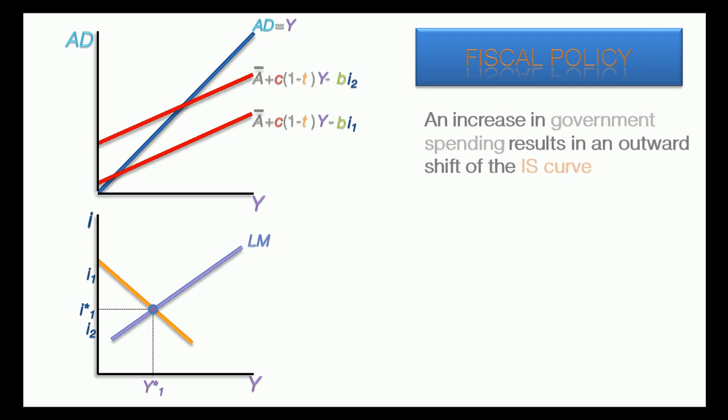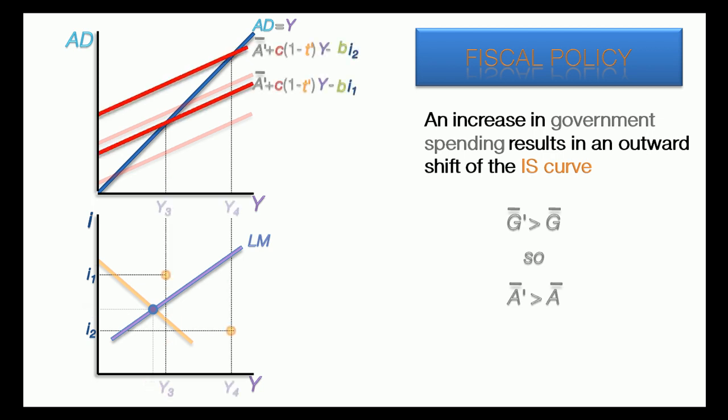By increasing government spending, the aggregate demand curves are shifted upward. The resulting IS2 is shifted outward. The money markets respond quickly and a new point of equilibrium is reached at I2 and Y2.